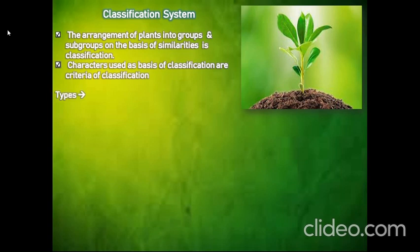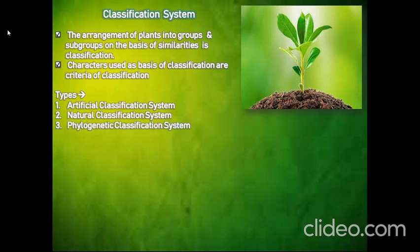There are three types of classification system: Artificial Classification System, Natural Classification System, and Phylogenetic Classification System. Starting from Artificial Classification System.